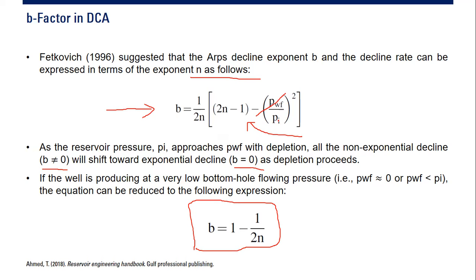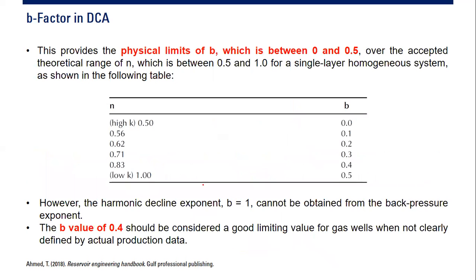If you have very small pwf, you can neglect this part as the numerator becomes very small. This simplification is very important because it provides the physical limits of b, which is between 0 and 0.5, over the accepted theoretical range of n, which is between 0.5 and 1.0 for a single layer homogeneous system as shown in the table.